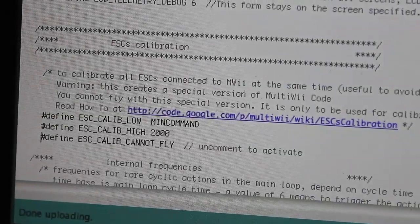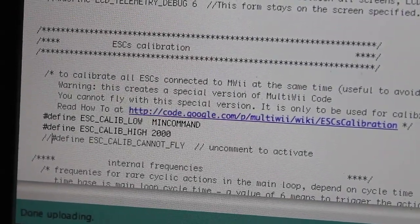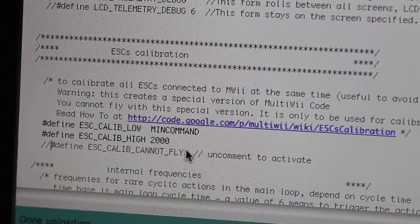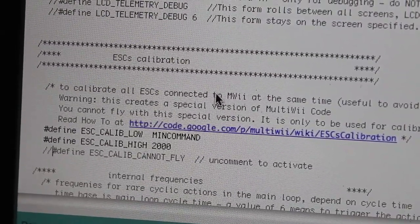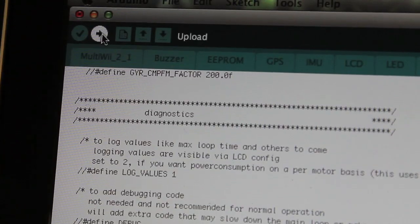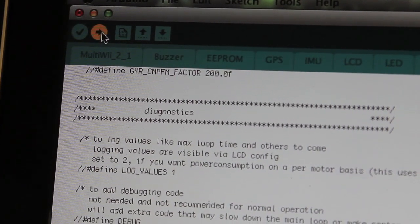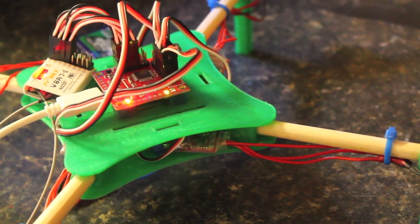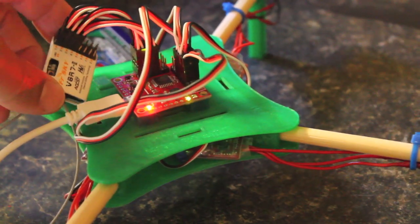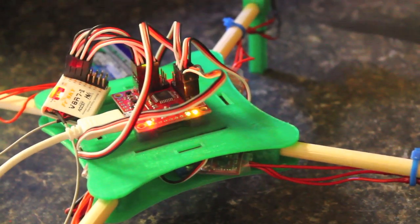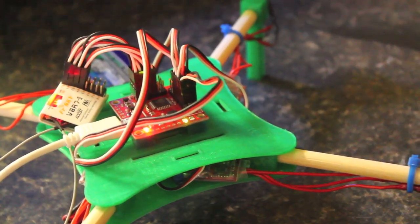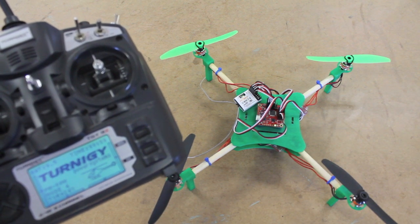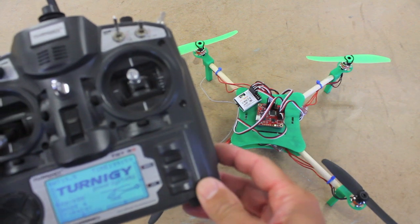The last thing that needs to happen is you need to comment out this ESC calibration cannot fly line and then re-upload the firmware. So I'm gonna upload with that line commented out, and now you can hear our ESCs beeping basically because the transmitter and the receiver aren't communicating. Our ESCs are now calibrated with the MultiWii ESC calibration routine.